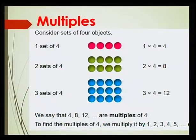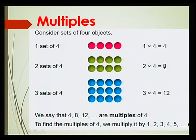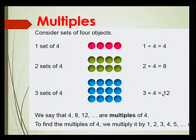What are multiples? Consider a set of 4 objects. If I have 1 set of 4 objects, this means I have 1 times 4, that is 4 objects. If I have 2 sets of 4 objects, this means I have 2 times 4, that is 8 objects. Similarly, if I have 3 sets of 4 objects, this means I have 3 times 4, that is 12 objects in all.